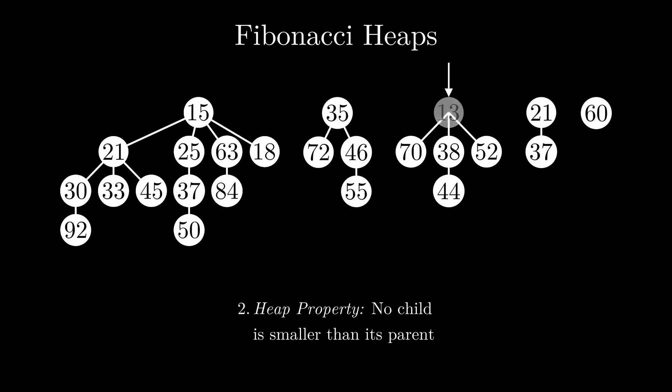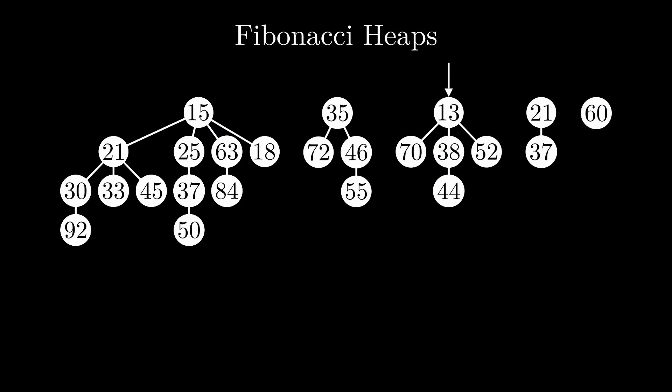Let's imagine we remove the smallest element. Which element is the next smallest one? Because each tree satisfies the heap property, we know it must either be one of the root nodes or one of the children of the previously smallest element. So for each ExtractMin call, we will need to iterate over all these nodes to find the next minimum. This means we want to keep both the number of trees in the root list and the number of children per node relatively low. Keep this in mind for later. You might still be wondering what this has to do with Fibonacci numbers — we'll get to that.